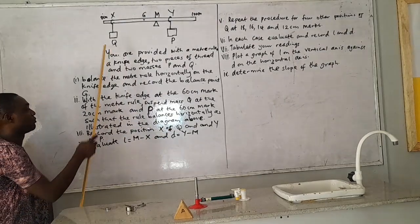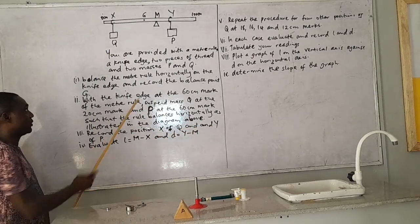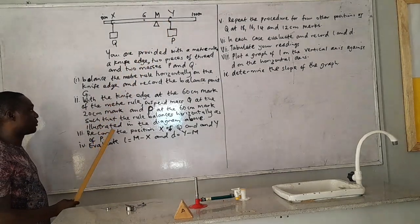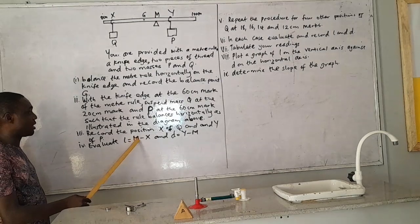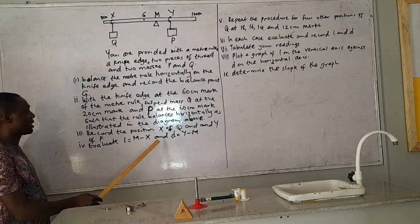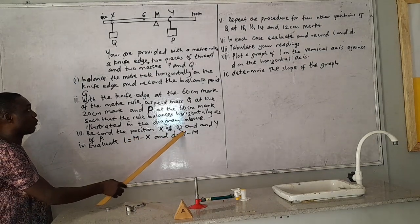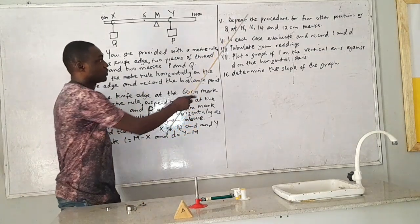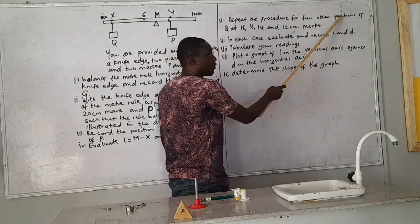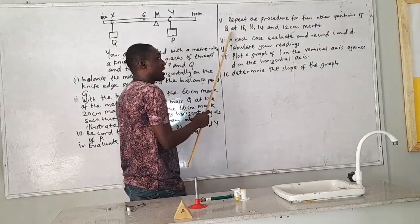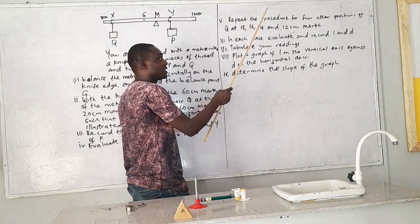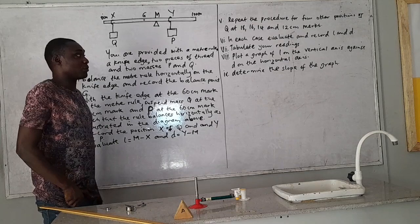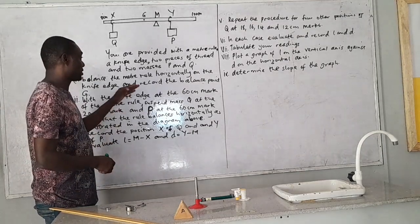Record the position X, you can see X here, of Q and Y of P. So this is the position of P, Y here. Record it. We have done that. Evaluate N equals M minus X and D is equal to Y minus M. So we'll do all of that. And repeat the procedures for four other positions of Q at 18, 16, 14 and 12 cm. So I'm going to draw a table for this.